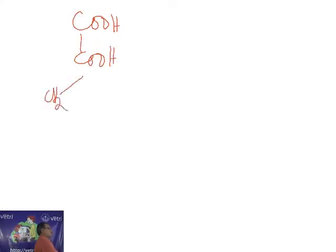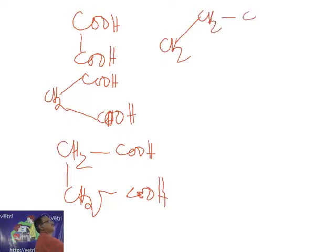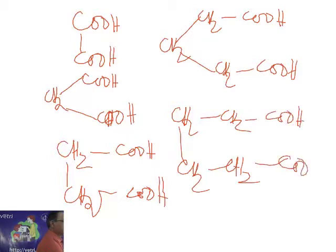Let me give you an important information. What is the member of dicarboxylic acid? First member is oxalic acid. Second member is malonic acid. Third member is succinic acid. And fourth member is glutaric acid. And next member is adipic acid. If you go up to this lower level, this is enough. So this is the dicarboxylic acid.